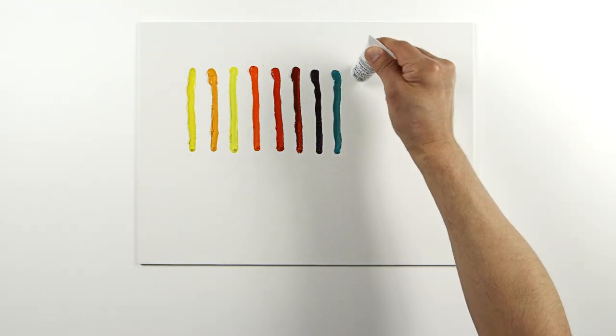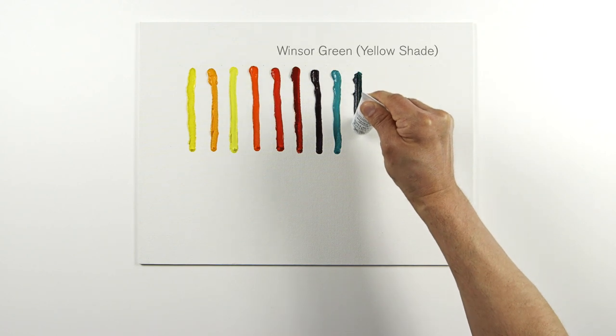Winsor Green Yellow Shade is a brilliant transparent green pigment with a yellow undertone.